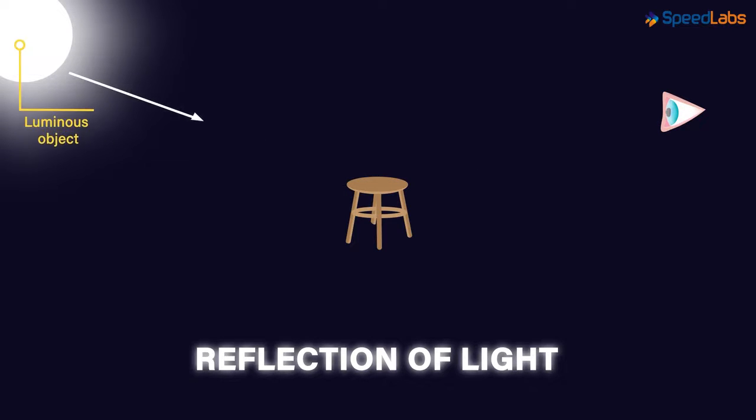The light coming from the luminous objects falls on the non-luminous objects. Non-luminous objects then reflect this light and this reflected light travels towards our eyes. And that's why we see the objects.